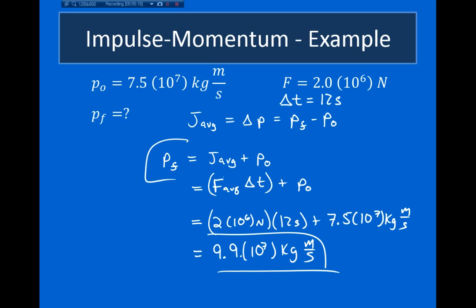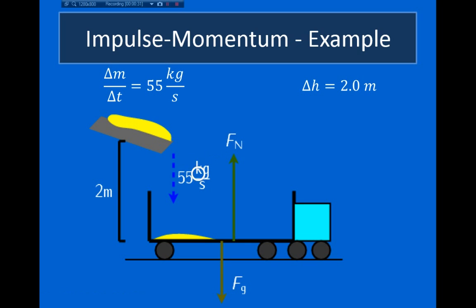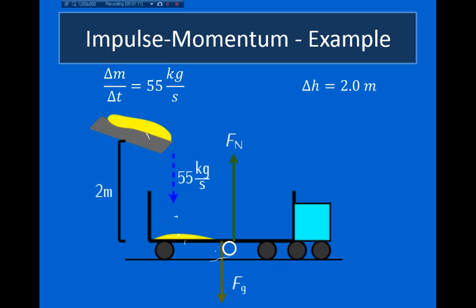Let's look at another example. A dump truck is being filled with sand at a rate of 55 kilograms per second. The sand falls from rest 2 meters into the bed of the truck. How much does the normal force exceed the actual weight of the truck? Sand comes down a trough, starts from rest, and falls 2 meters into the bed of the truck. When the sand hits the truck it's moving downward, then the bed exerts an upward force to bring it to rest. By Newton's third law, the sand pushes down on the truck, which is why the normal force exceeds the gravitational force.